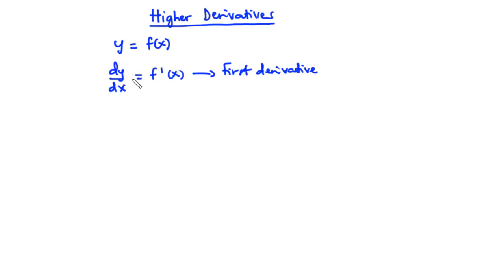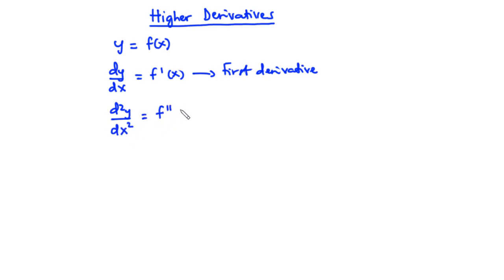Assuming we differentiate dy/dx with respect to x, then what we get is d²y over dx². This is the same as f double prime of x, and this is called the second derivative of y with respect to x.